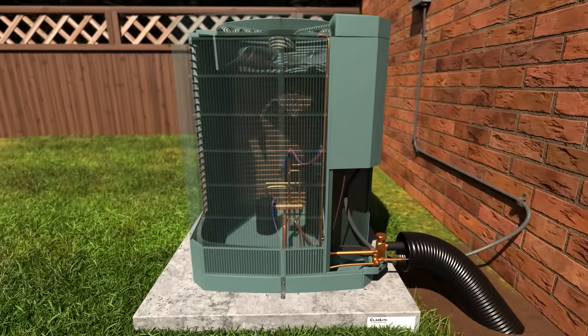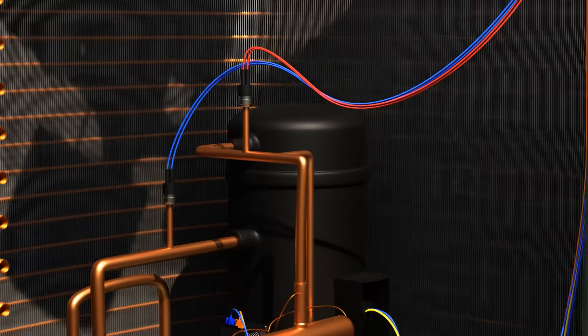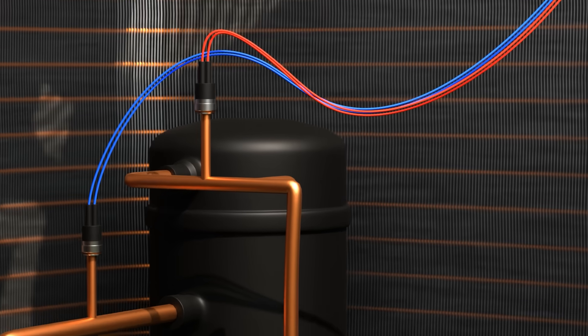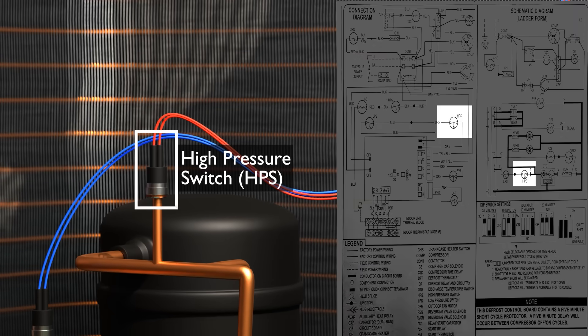Now let's show some common components on this system. Here we show our low-pressure switch and how it's shown on our two different diagrams, the connection diagram and the standard schematic diagram that come with a Carrier condensing unit. Here we show our high-pressure switch with our connection diagram and our schematic ladder diagram.